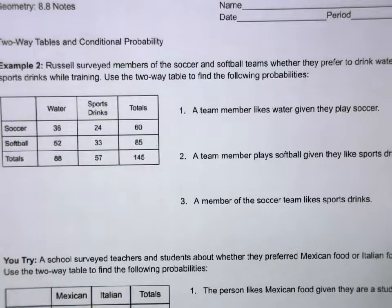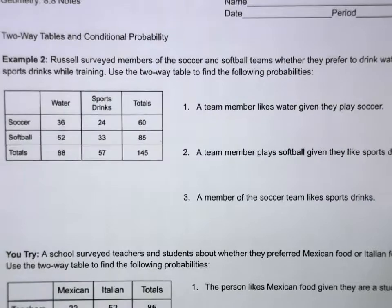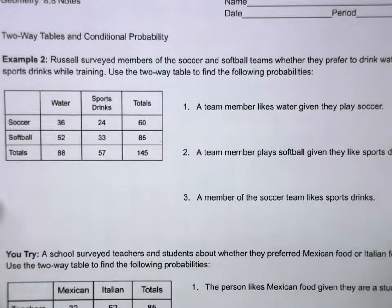In the last lesson we talked about conditional probability, and two-way tables are a classic example of using conditional probability. Russell surveyed members of the soccer team and softball teams to see if they liked water or sports drinks while training. Use the two-way table to find the following probabilities.